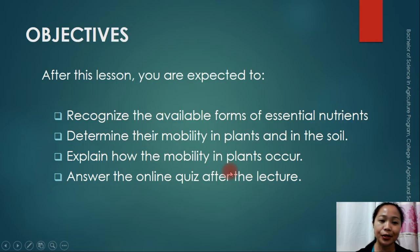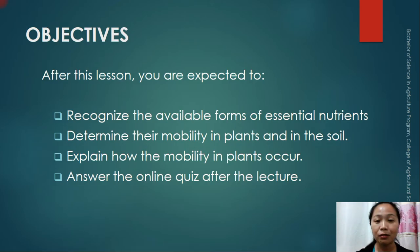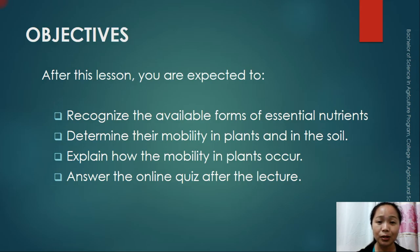For the objectives of this lesson: after this lesson you are expected to recognize the available forms of essential elements or essential nutrients in the soil, determine their mobility in plants and in the soil — since each nutrient has different mobility — and explain how mobility in plants occurs. You will also answer an online quiz after the lecture, which is very interactive.